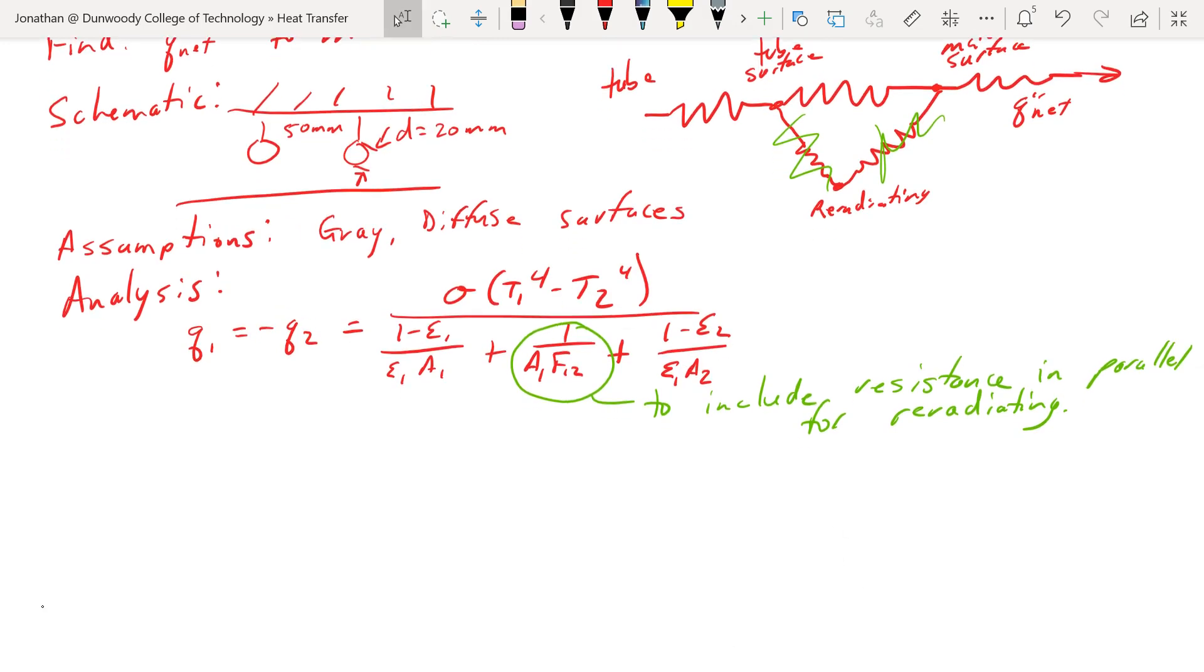So what does that look like? If I expand that out, I'm going to see Q1 equals the same stuff that I had before, sigma T1 to the fourth minus T2 to the fourth over 1 minus epsilon 1 over epsilon 1 A1. That's that material resistance, plus now this is our combined resistance.